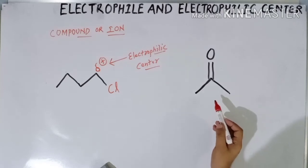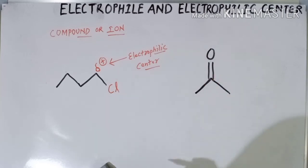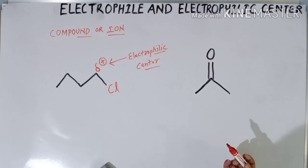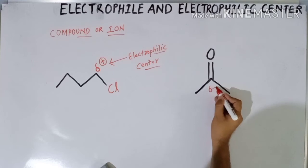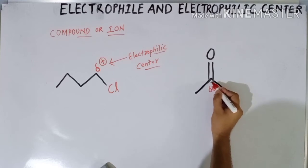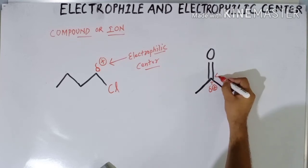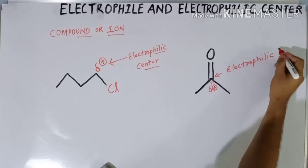Now look at this second molecule. This molecule contains a carbonyl group. A carbonyl group means carbon is directly attached to oxygen. Here also, oxygen is electronegative, so it tries to pull the electrons toward itself. Due to the inductive effect, this center carbon becomes slightly positive, and this carbon again becomes an electrophilic center.